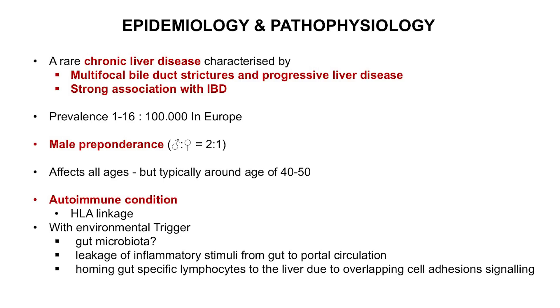There's been a lot of speculation as to what that might be. The link with inflammatory bowel disease has led to a lot of speculation about a role of gut microbiota or the passage of inflammatory stimuli from the gut into the portal circulation. There's some evidence for homing of gut-specific lymphocytes to the liver due to overlapping cell adhesion signalling. But at the moment, it's not clear what the additional hit is.